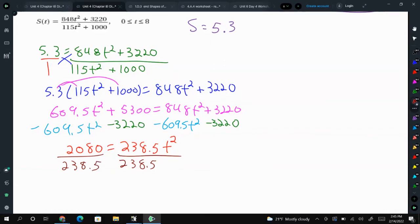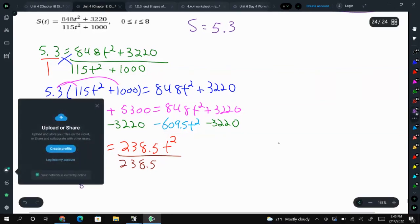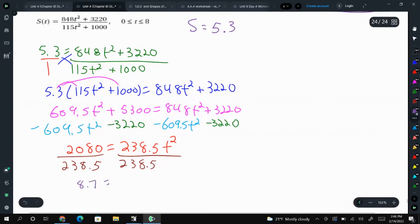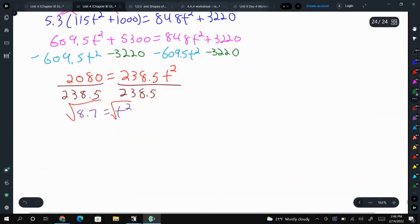And that's going to give us a decimal, and that's okay. That gives us 8.7. And then we square root both sides. The square root of 8.7 is really close to 3, so we're going to just round that. We get 2.95 is equal to T. So about 3 years.